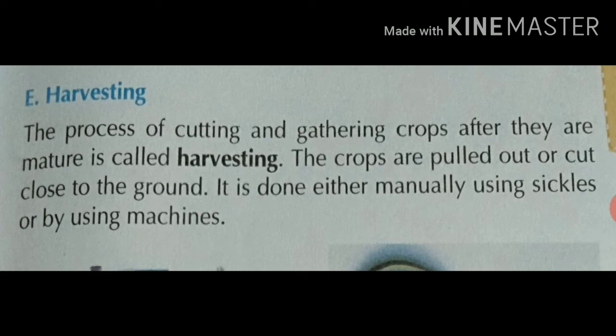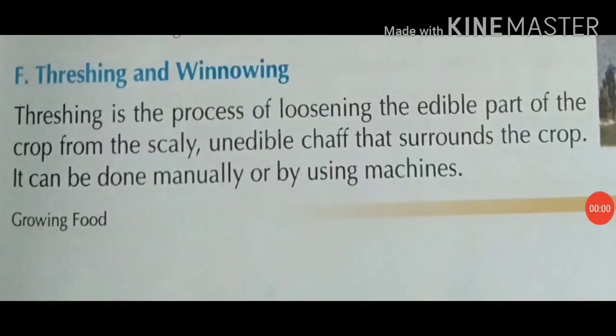Harvesting is done either manually using sickles or by using machines. Farmers can cut crops by hand and also by the help of machines. So either using machines or using sickles, crops can be cut from the crop plants.